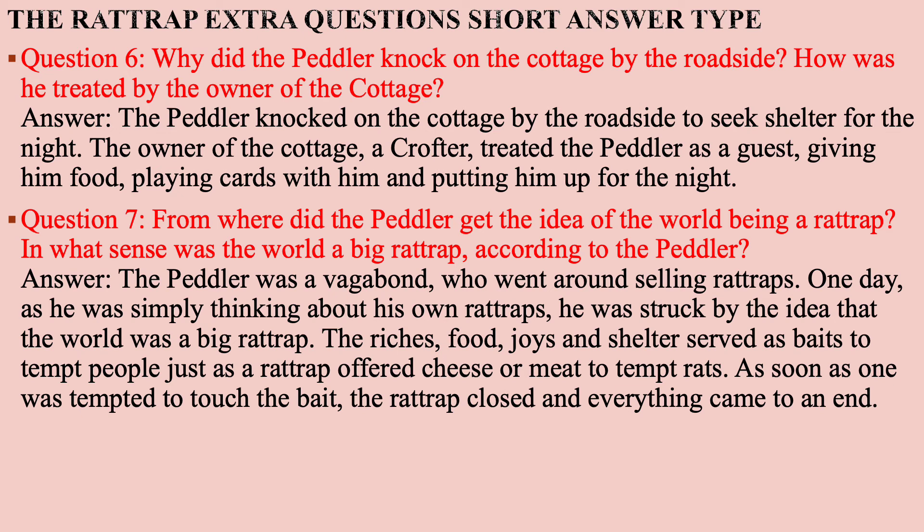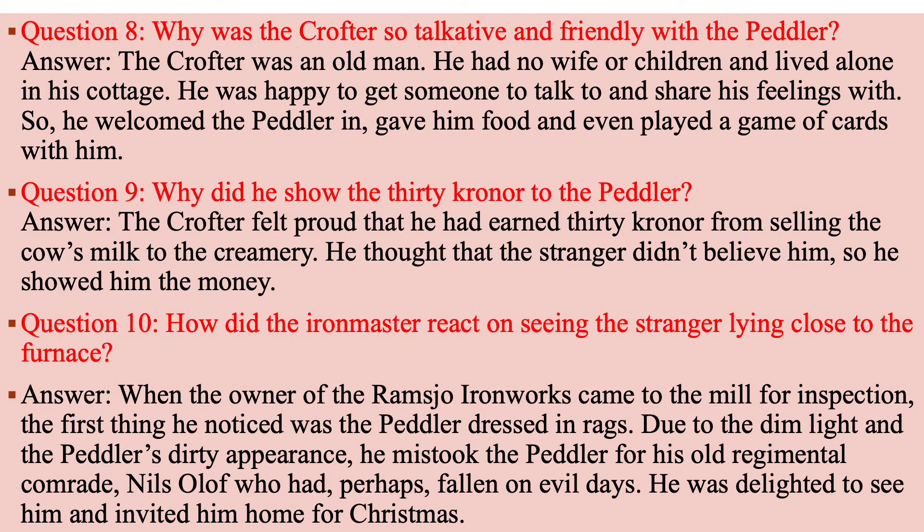Question number seven: From where did the peddler get the idea of the world being a rat trap, and in what sense was the world a big rat trap according to the peddler? Answer: The peddler was a vagabond who went around selling rat traps. One day as he was thinking about his own rat traps, he was struck by the idea that the world was a big rat trap. The riches, food, joys, and shelter served as baits to tempt people, just as a rat trap offers cheese or meat to tempt rats. As soon as one was tempted to touch the bait, the trap closed and everything came to an end.